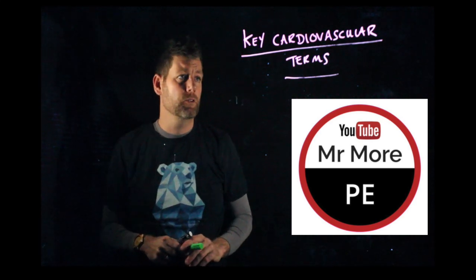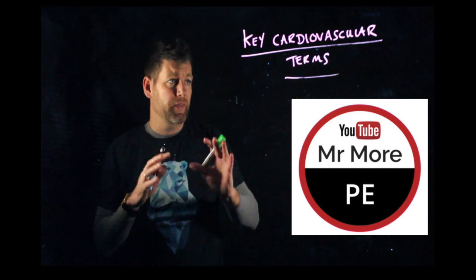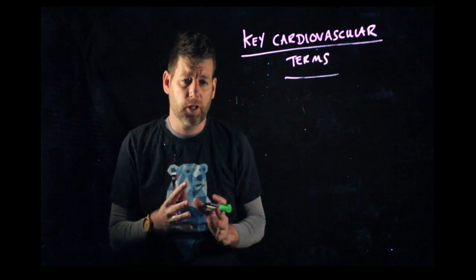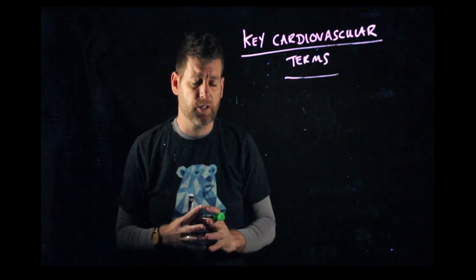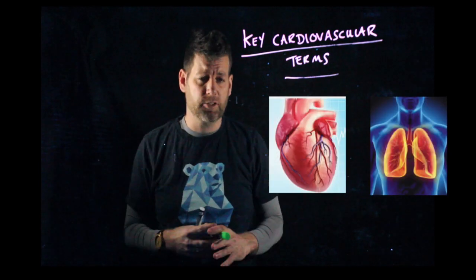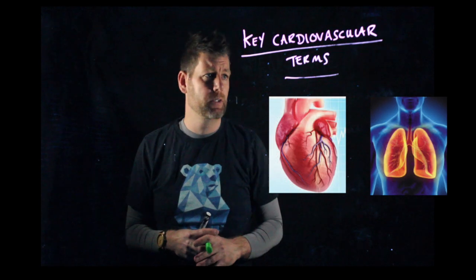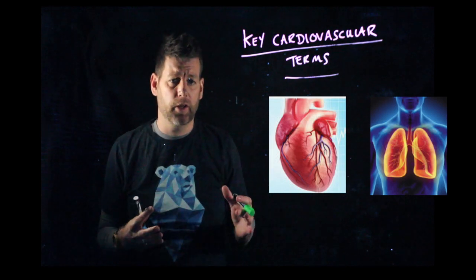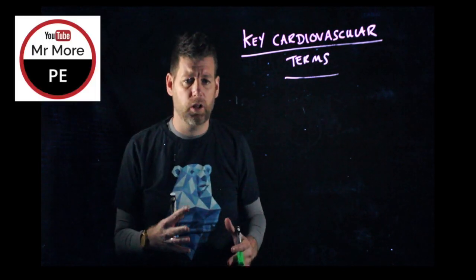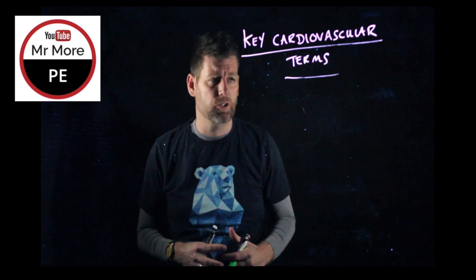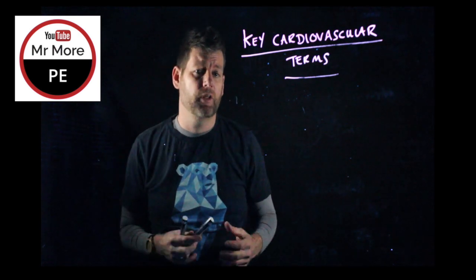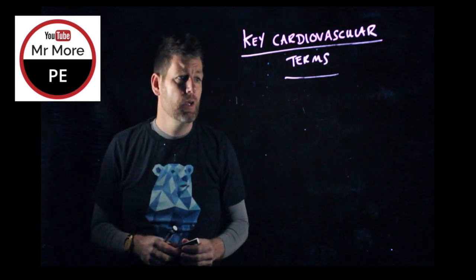Welcome back to Mr. More PE. We're going to talk about the key cardiovascular terms. So just to clarify, the cardiovascular system — we're talking about the heart and lungs. And in exercise, that's super important because obviously if we're doing endurance events like running, cycling, swimming, or cross-country skiing, we need to have a really effective cardiovascular system.